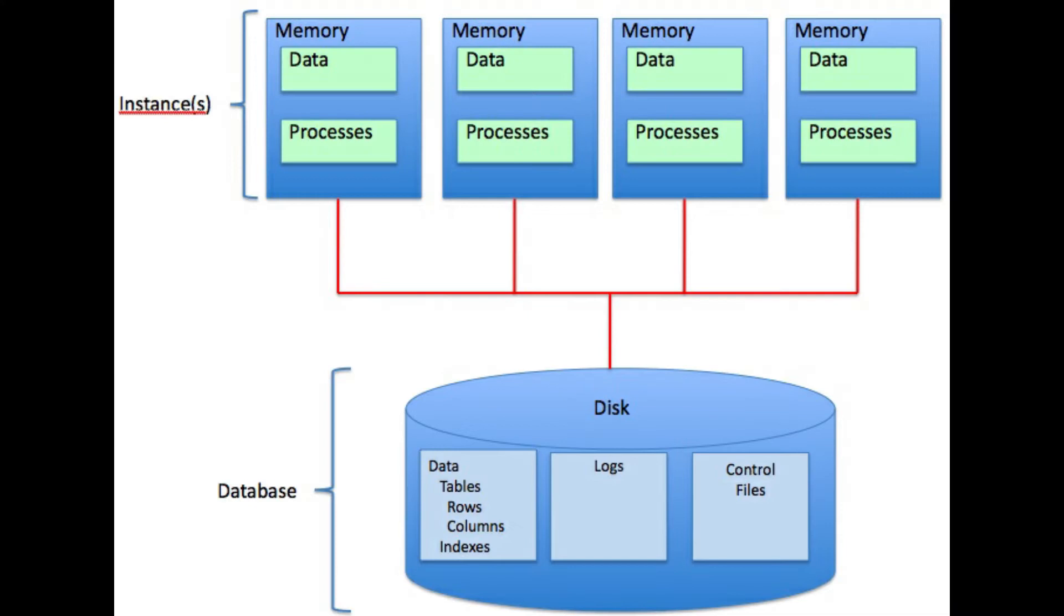In shared disk architecture, as the name suggests, the disk is shared among multiple nodes. But the main memory is not shared. Each of the node will have its own private memory. This private memory is used to store the temporary data and execute the processes. Whereas the shared disk will be storing the data in form of tables, rows and columns.